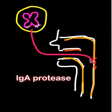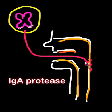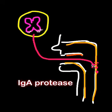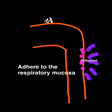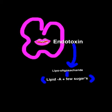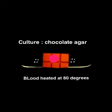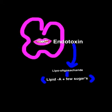The protein present in its outer membrane is immunoglobulin A protease. The IgA present on the respiratory tract or the pharyngeal wall is cleaved by this enzyme, which helps the organism adhere to the respiratory mucosa and further cause infection. The organism also contains an endotoxin in the outer membrane. This lipopolysaccharide consists of lipid A.